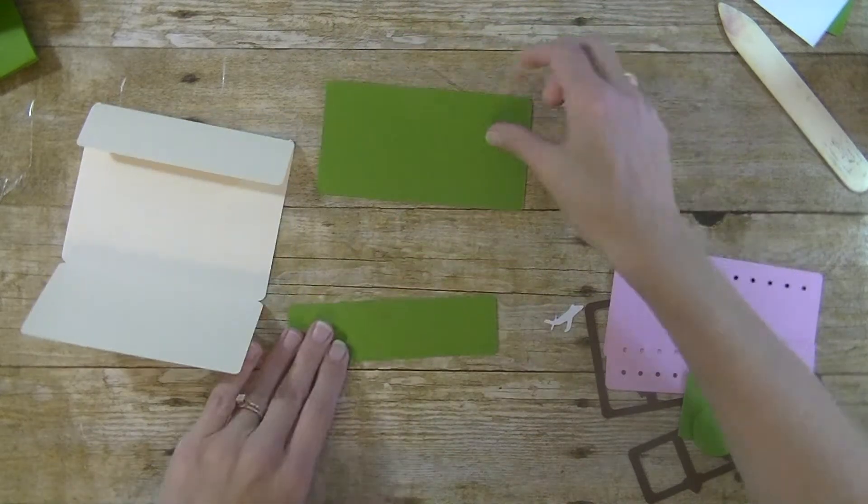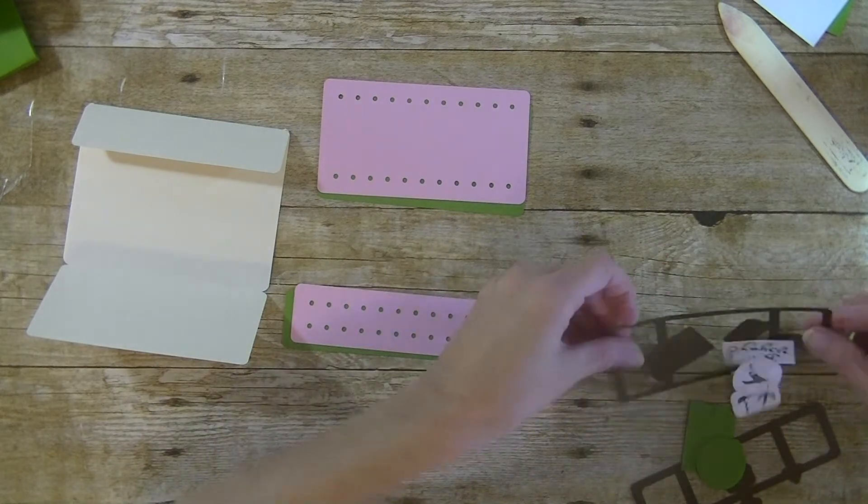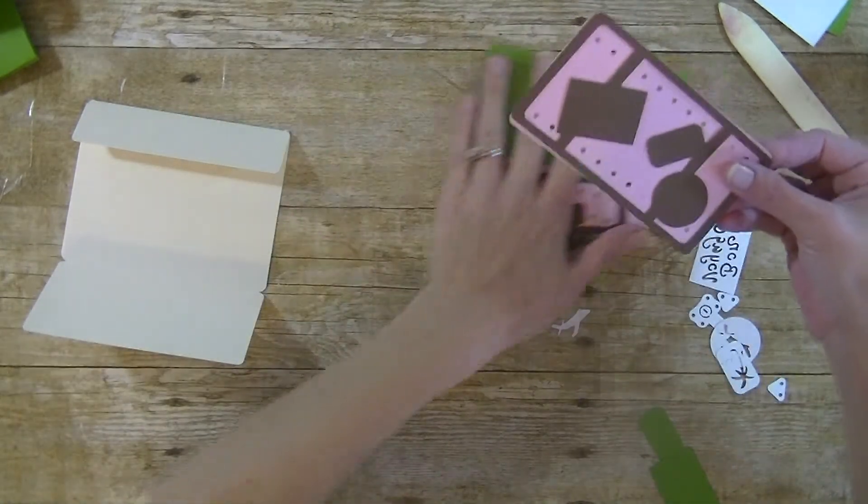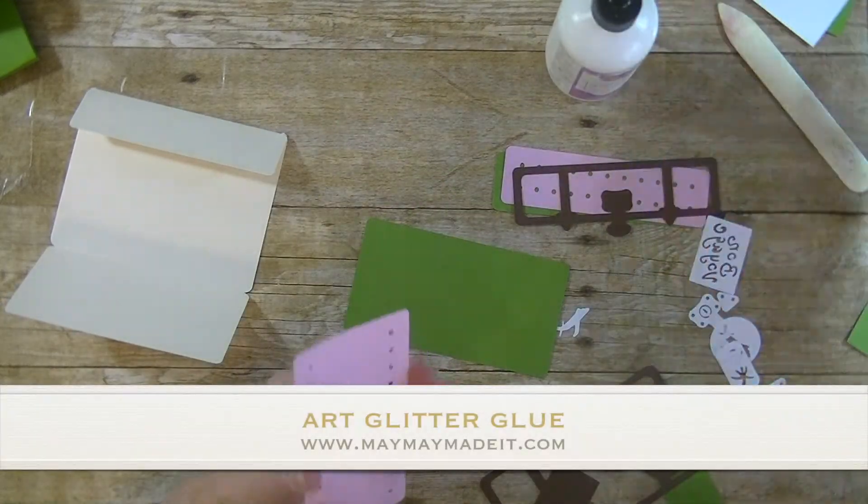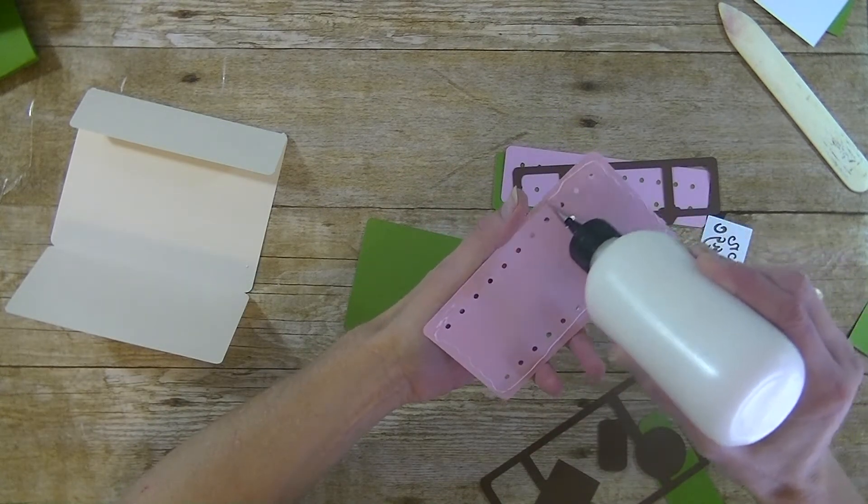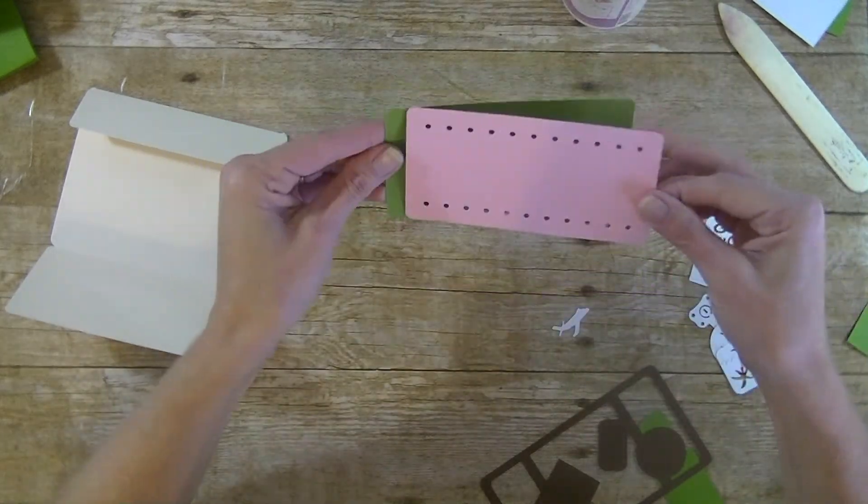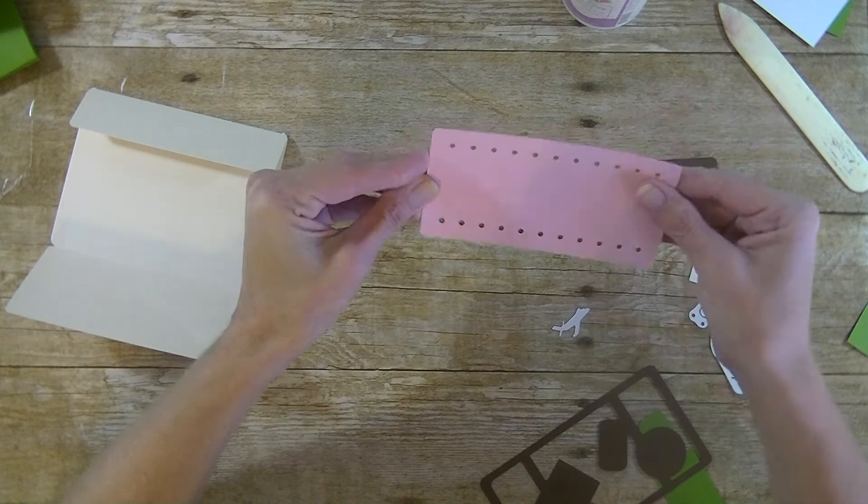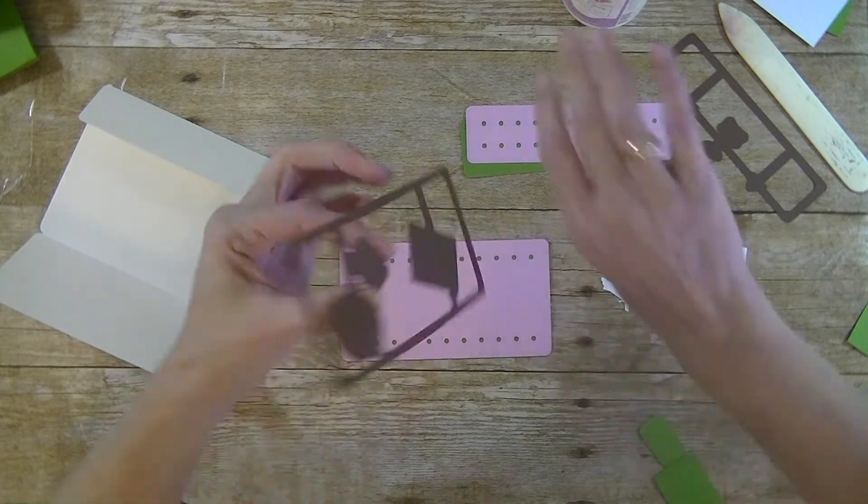So we have that. Then we have our green layer here and our brown. I chose pink. You can choose any color you like. I think green, pink, and brown all go really well together. You can see how they're going to layer up. We're going to first work on this one here. Take our pink to our green. I'm using art glitter glue. I get it from maymaymadeit.com.